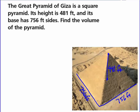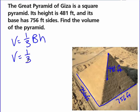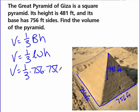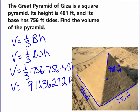Let's find out how you did. Volume equals one-third capital B times H. Our capital B is a square, so that's length times width times the height. Volume equals one-third times 756 times 756 times 481. In the calculator: 756 times 756 times 481 equals, then divide by 3. The volume of the Great Pyramid is 91,636,272 cubic feet.